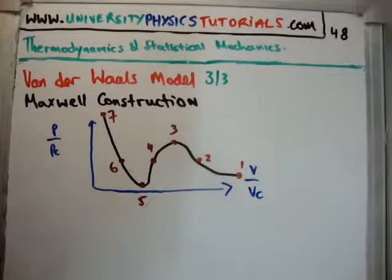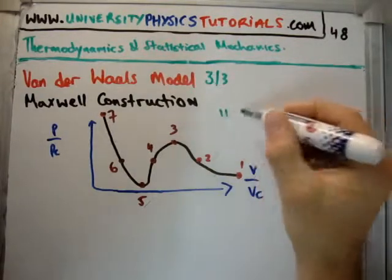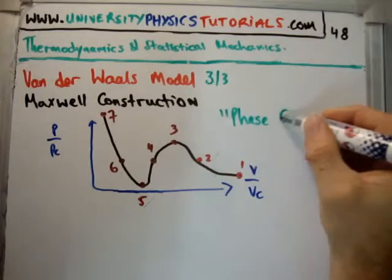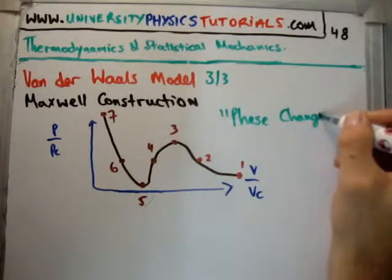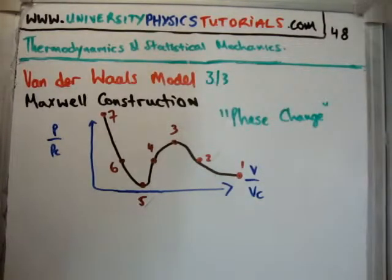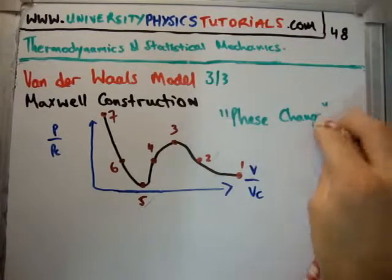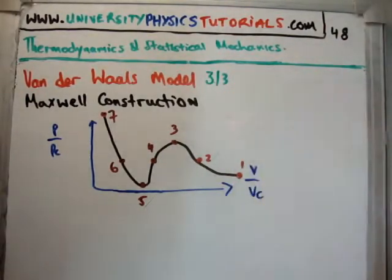But why does it fail? What physical phenomena can we think of which might explain this? And what should pop into your head is a phase change. So what the van der Waals model doesn't predict, I suppose, is phase changes, or doesn't really analyze is phase changes, but it shows you where they happen. So we have phase change happening.